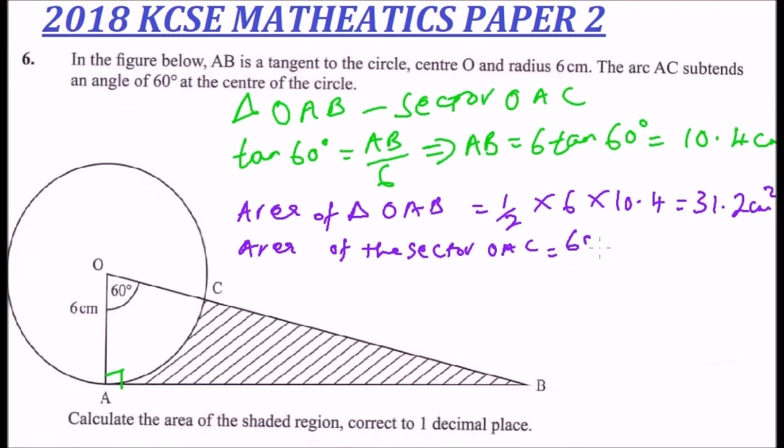Which is 22 over 7, you multiply by radius squared, 6 times 6, and that should give you 18.8 centimeters squared.